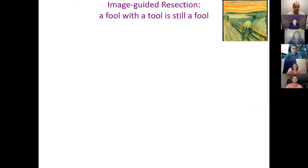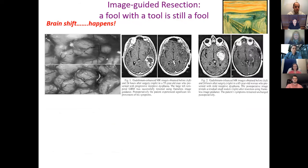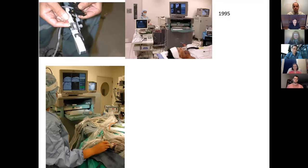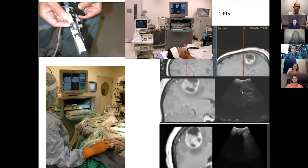Unfortunately, image-guided resection does not by itself guarantee gross total resection. We do know that brain shift can happen — this was published by one of our residents — and so some of those images have to be updated and upgraded. One possibility for metastatic disease is to use ultrasound. We developed this with what is now called Medtronic, where we can interface any ultrasound with the preoperative images. Intraoperatively, since all metastatic disease is echogenic, you can see it. At the end of surgery, you quickly scan the brain and see lack of echogenicity, which confirms a gross total resection.